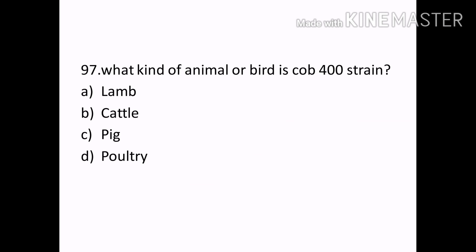What kind of animal is Coop 400 strain? Options — Lamb, Cattle, Pig, Poultry. Correct answer: Option D — Poultry.